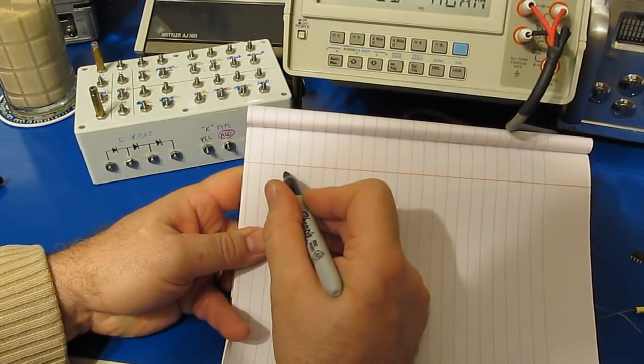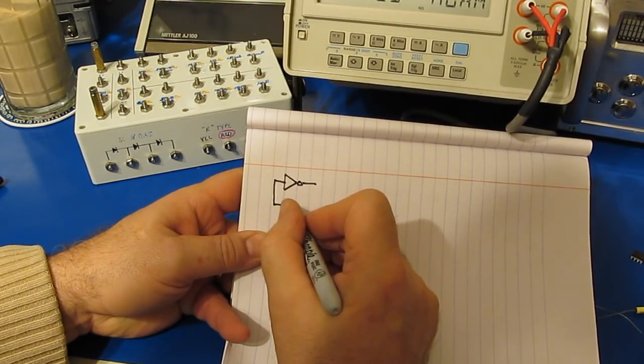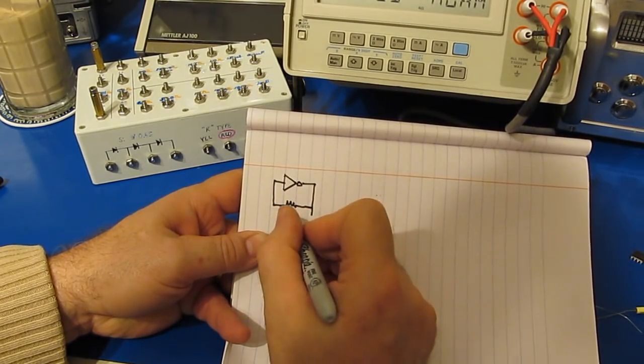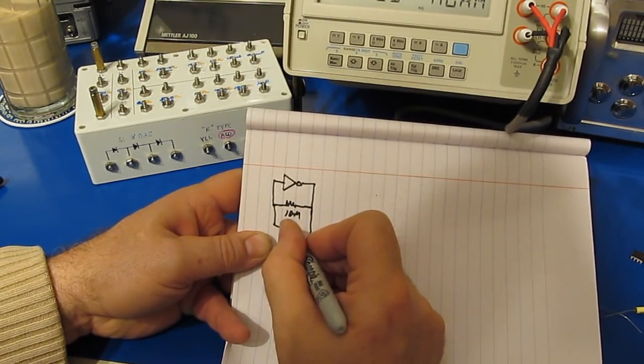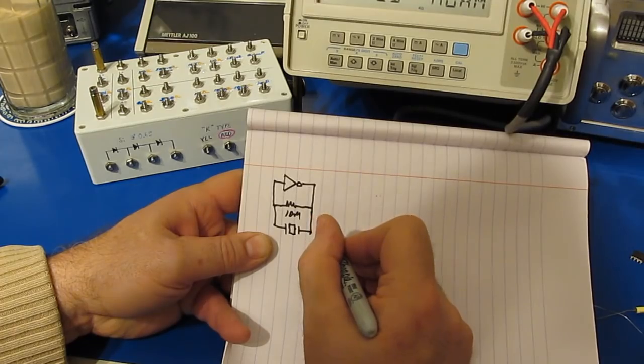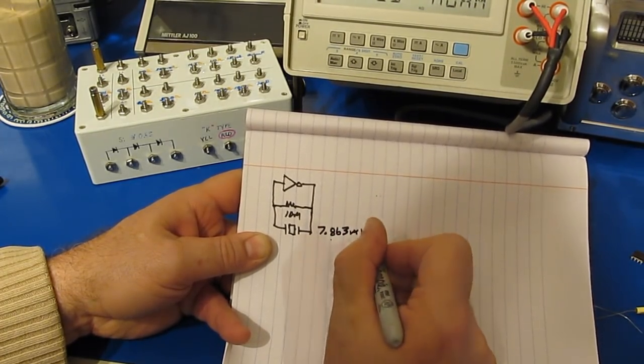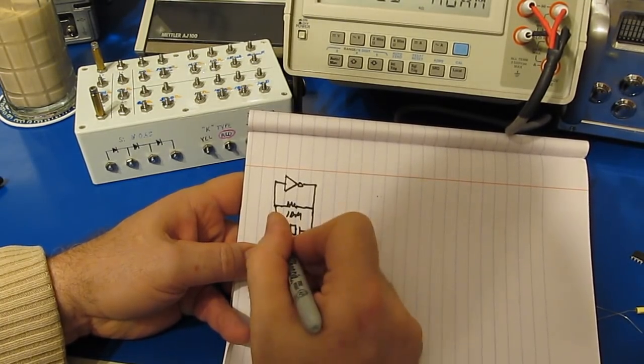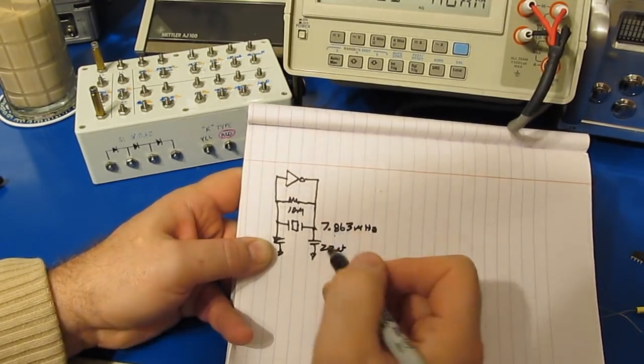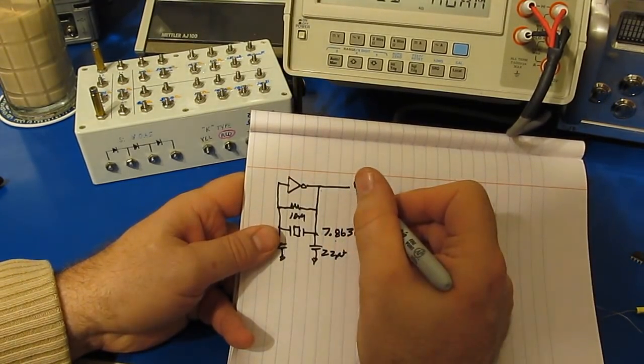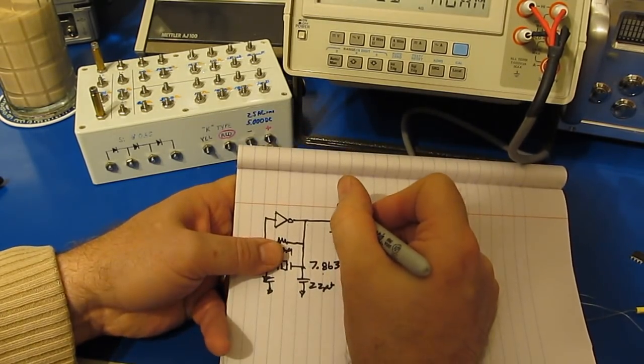To generate the AC I'm using a 74HC04 which is nothing more than inverter and I have a 10 meg resistor across it and then that's in parallel with a crystal that has a frequency of 7.863 megahertz and then I have a couple of capacitors that go to ground, these are each 22 picofarads. So this gives me my clock.